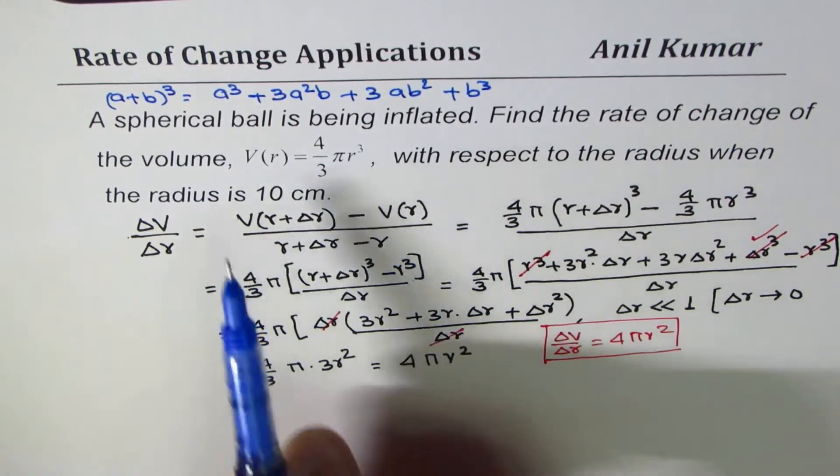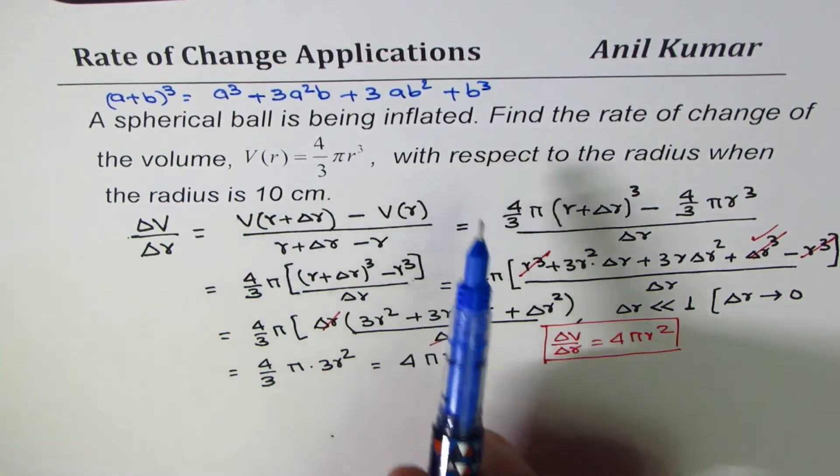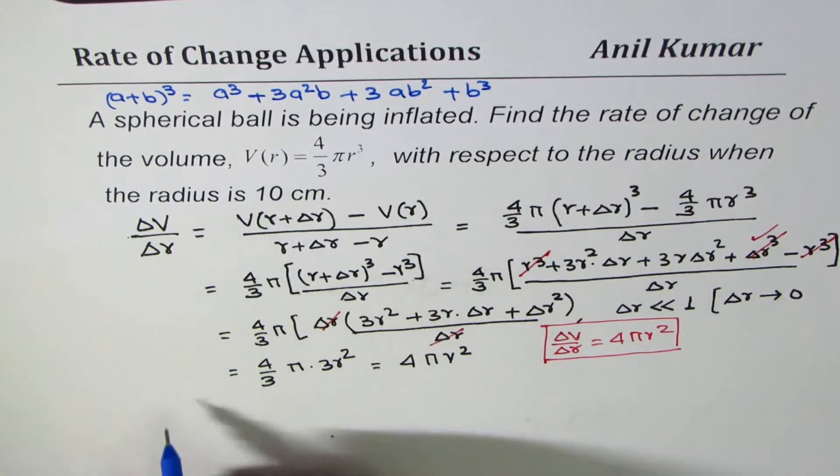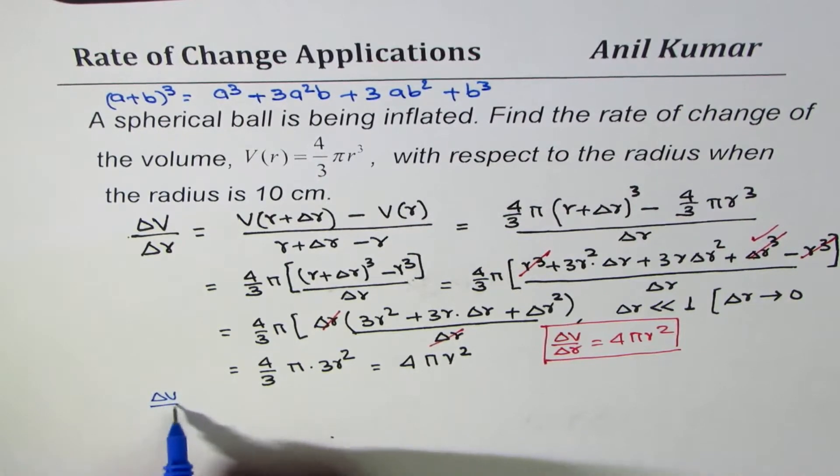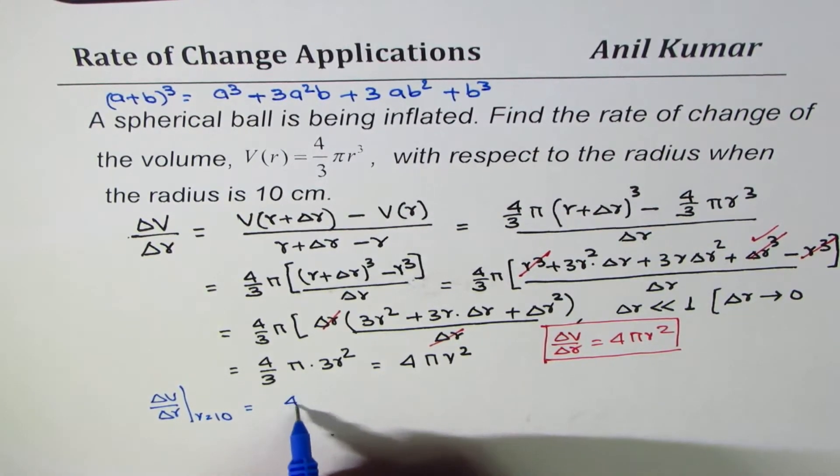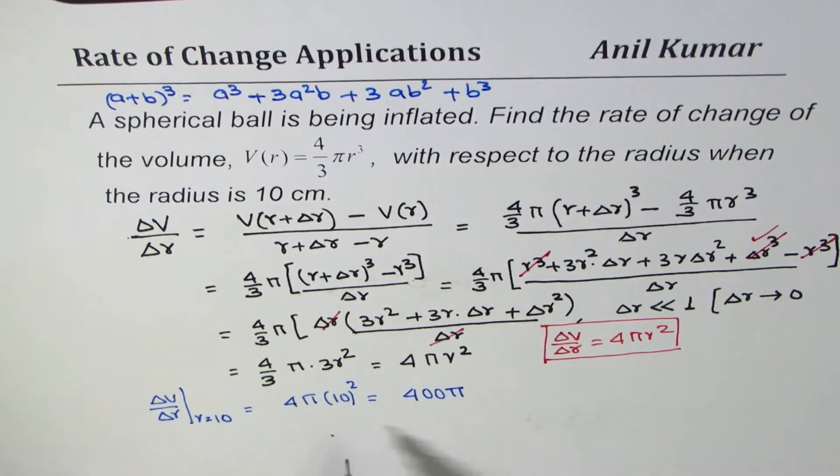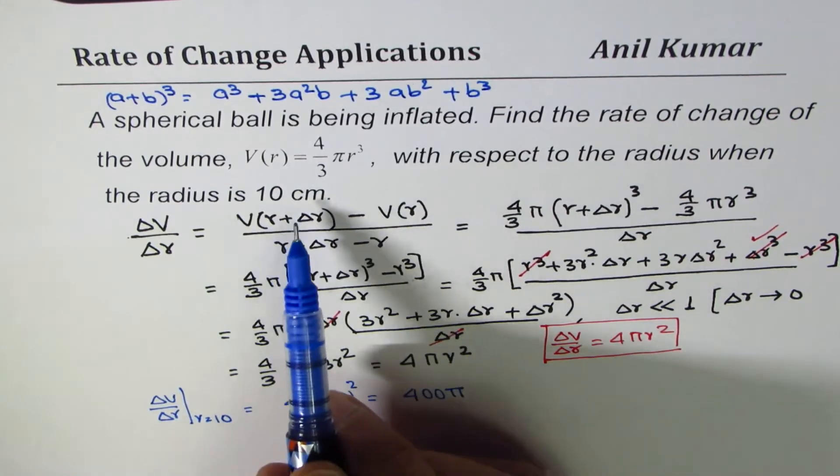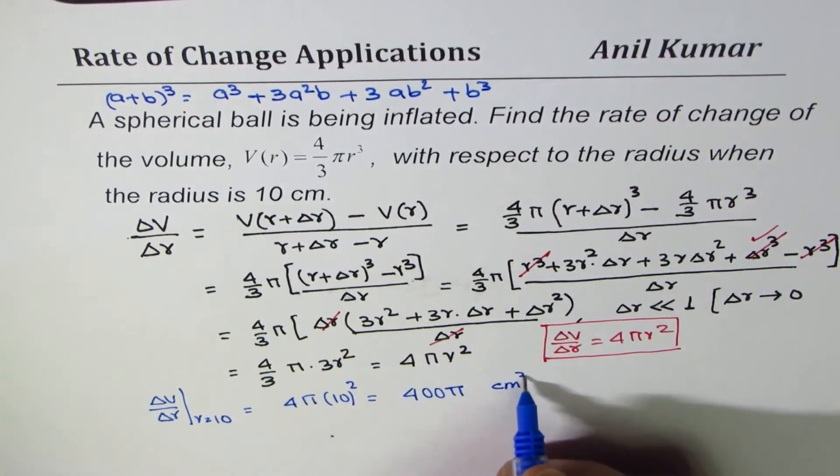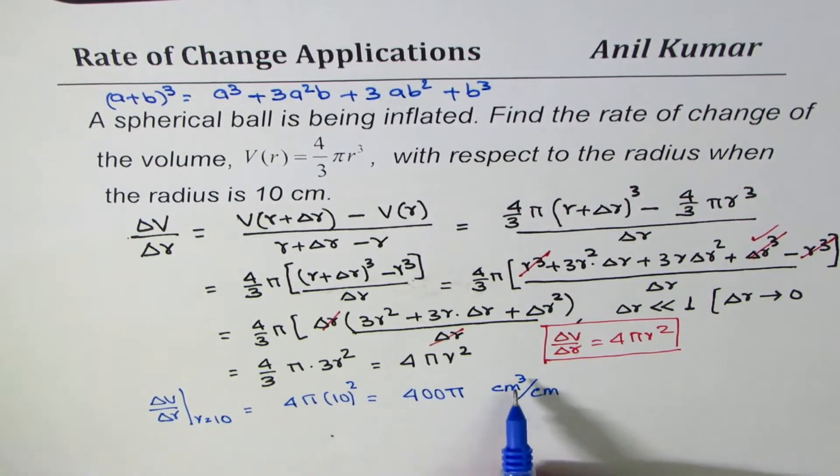Now let's do the needful with respect to radius when radius is 10 centimeters. We substitute 10 here, so we get 4π times 10² which is 400π. Now the units are centimeter cube for volume over centimeter for radius. It's important to write this unit: cm³/cm.